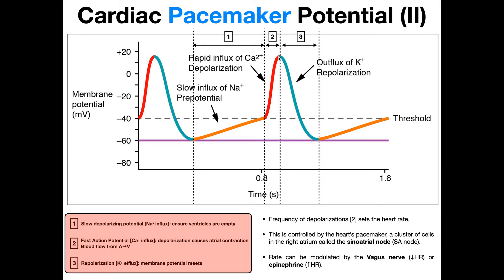When determining the rate of depolarization, we're really just measuring the distance and time between this peak and this peak. If those peaks come closer together, the rate of depolarization increases and we have a higher heart rate. If the distance between the two peaks increases, we have a slower rate of depolarization and a slower heart rate. The vagus nerve, which is part of the parasympathetic nervous system, will actually increase the distance between these two peaks, which decreases the rate of depolarization and decreases the heart rate.